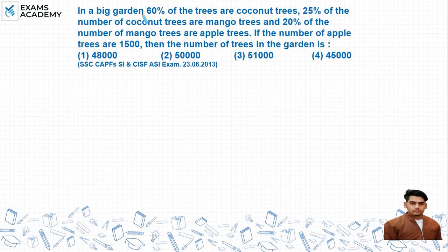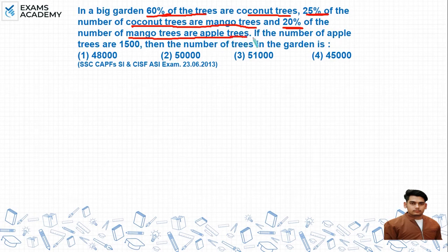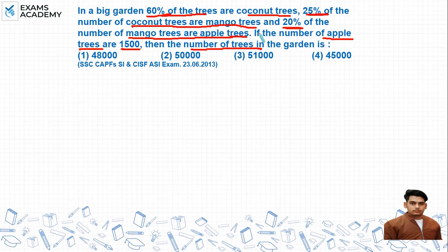In a big garden, 60% of the trees are coconut trees, 25% of the coconut trees are mango trees, and 20% of the mango trees are apple trees. If the number of apple trees is 1500, find the total number of trees in the garden.